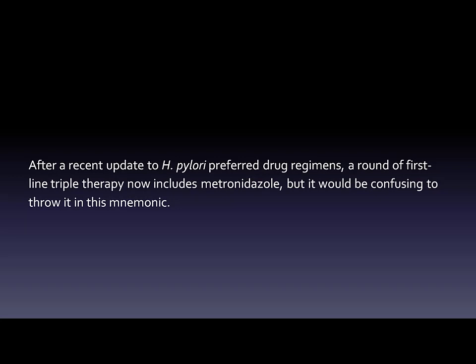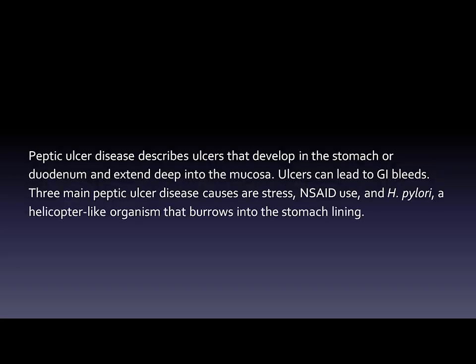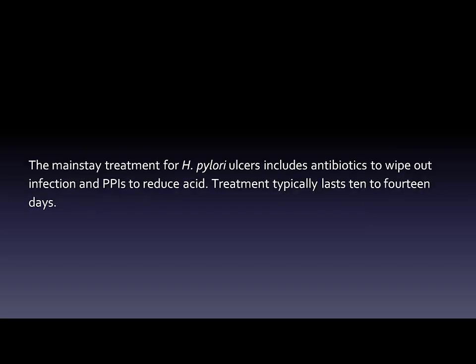But it would be confusing to throw it in this mnemonic. Peptic ulcer disease describes ulcers that develop in the stomach or duodenum and extend deep into the mucosa. Ulcers can lead to GI bleeds. Three main peptic ulcer disease causes are stress, NSAID use, and H. pylori, a helicopter-like organism that burrows into the stomach lining. The mainstay treatment for H. pylori ulcers includes antibiotics to wipe out infection and PPIs to reduce acid. Treatment typically lasts 10 to 14 days.